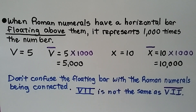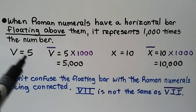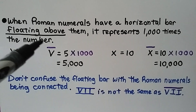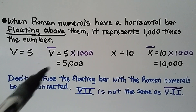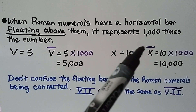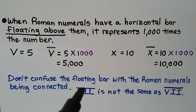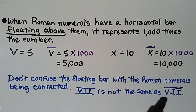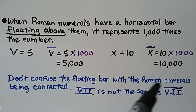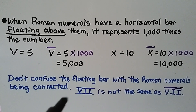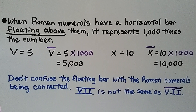When Roman numerals have a horizontal bar floating above them, it represents 1,000 times the number. V equals 5, so V-with-a-bar equals 5 times 1,000, which is 5,000. X equals 10, so X-with-a-bar equals 10 times 1,000, which is 10,000. Don't confuse the floating bar with Roman numerals that are connected — a V followed by II is 7, not the same as VII-with-a-bar, which would mean 7,000. The bar must be floating above with nothing underneath it.